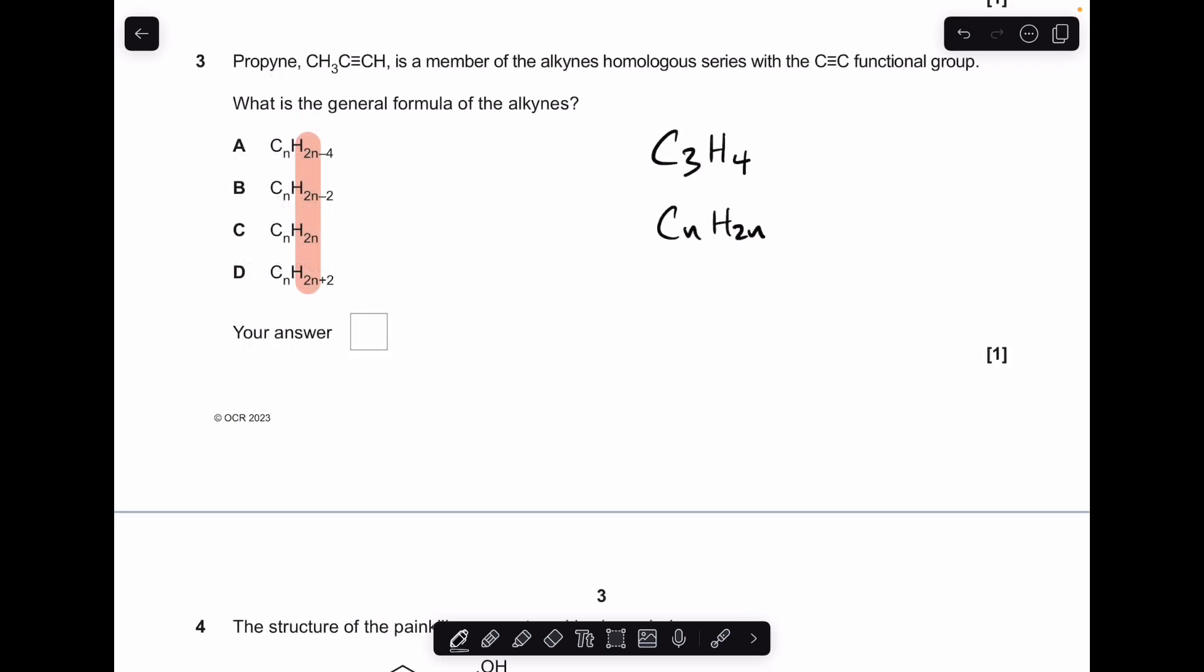Moving on to number three. C3H4 is the molecular formula of propyne. You'll notice that all the options are CnH2n, so if we work out that now, C3H2n would be 6, so we need to subtract 2 from that. So there's your answer, CnH2n-2, so B.